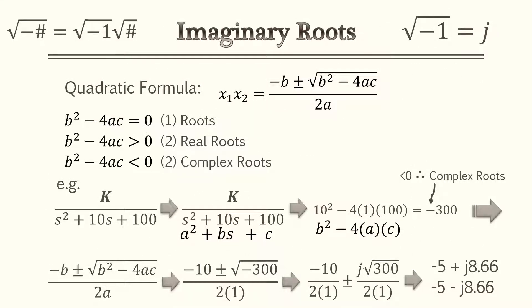When populating pole-zero diagrams it's very common to encounter second-order models as transfer functions. In that case you need to apply the quadratic formula. There are three cases based on the discriminant b² minus 4ac: if it equals zero there is one root; if it's greater than zero there are two real roots; and if it's less than zero there are two complex roots, indicated by i or j for imaginary.